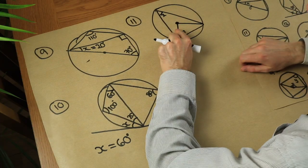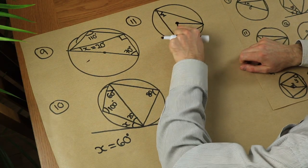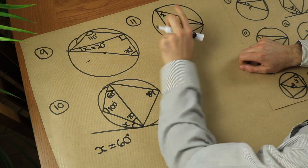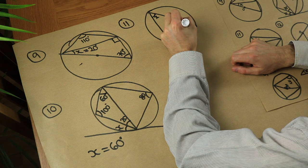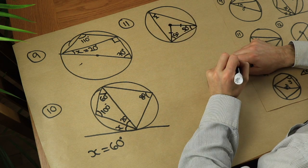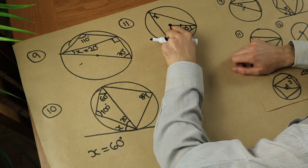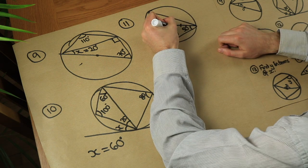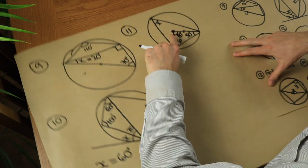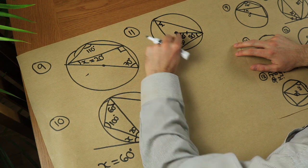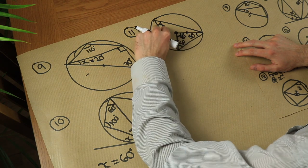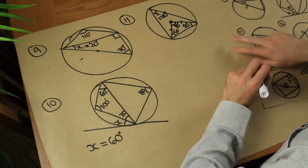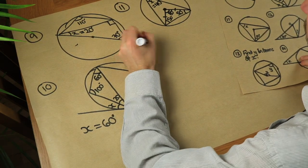For question eleven, two lines are both radii so they're equal in length, making an isosceles triangle. The other base angle is also 50 degrees. The three angles add to 180 — two angles total 100 — so the apex angle is 80 degrees. Then the angle at the centre is double the angle at the circumference, so that circumference angle is 40 degrees.